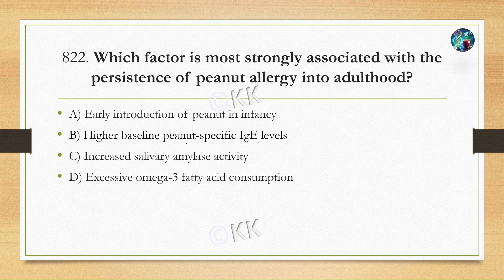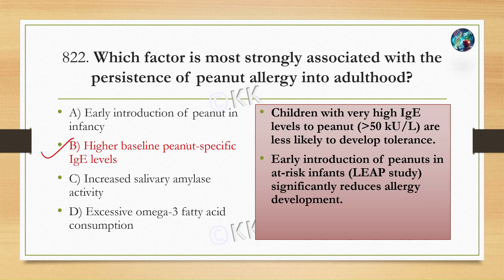Next question: which factor is most strongly associated with the persistence of peanut allergy into adulthood? Option A: early introduction of peanut in infancy. Option B: higher baseline peanut-specific IgE level. Option C: increased salivary amylase activity. Option D: excessive omega-3 fatty acid consumption. The correct option is B — higher baseline peanut-specific IgE level.